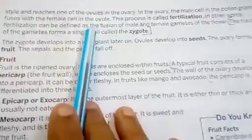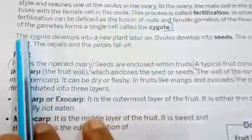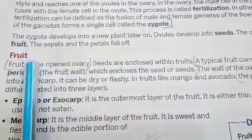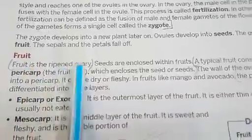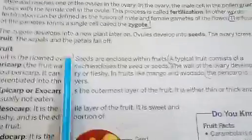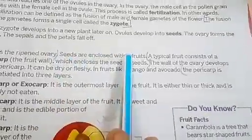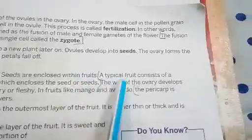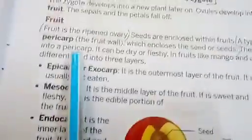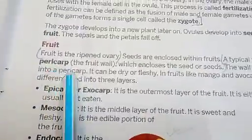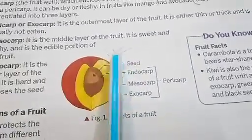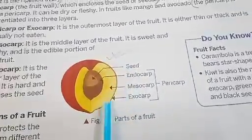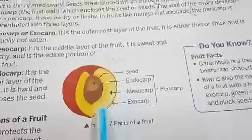After fertilization, the ovary develops into the fruit. So what is the fruit? Fruit is the ripened ovary, and inside the fruit seeds are present. What is the structure of a typical fruit? A typical fruit consists of pericarp, which is the fruit wall.